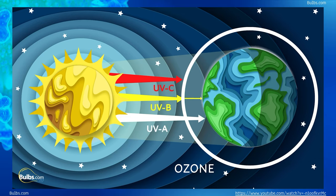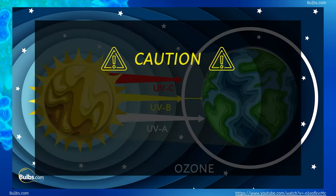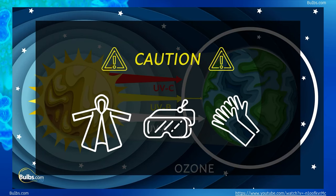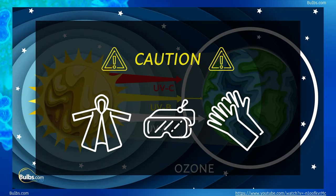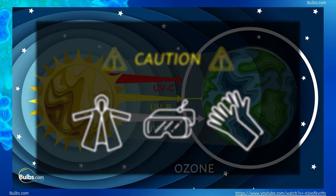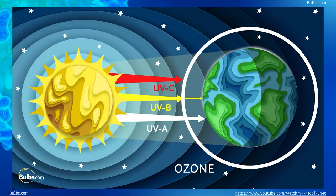It's important to remember that without the ozone layer to protect us, artificial UV light can be harmful to living things and should be used in unoccupied spaces, or special protective gear should be worn to avoid the damaging effects to skin and eyes.